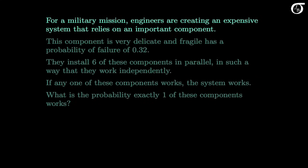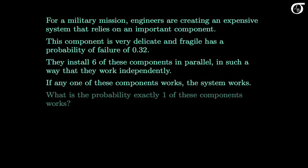For a military mission, engineers are creating an expensive system that relies on an important component. This component is very delicate and fragile, and has a probability of failure of 0.32. That's a very high probability of failure, so to mitigate the risk, they install six of these components working independently and connected in parallel, so that if any one of the six components works, the system works. What is the probability exactly one of these components works?